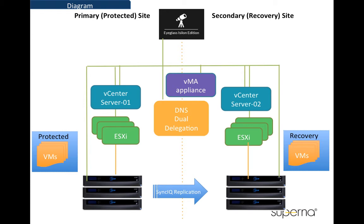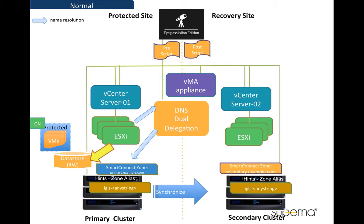Now we want to show you the setup diagram for this demo. In this diagram, we can see there are two sites: protected and recovery sites. There are two separate setups including vCenter server, ESXi host, and Isilon cluster for the NFS datastore. EyeGlass will communicate to the vSphere environment through the VMA. We can see that the protected VM is running on the NFS datastore from the primary cluster, and the SyncIQ replication pair has been configured and is in operation to replicate data from primary to secondary cluster.